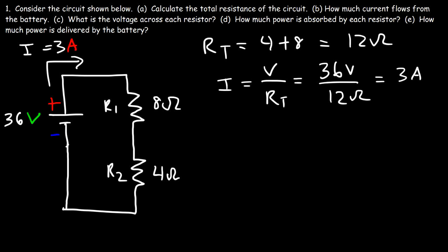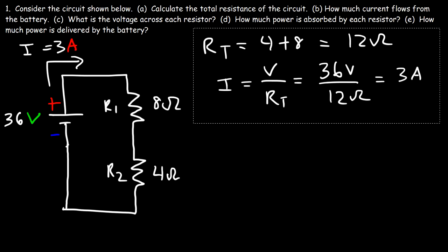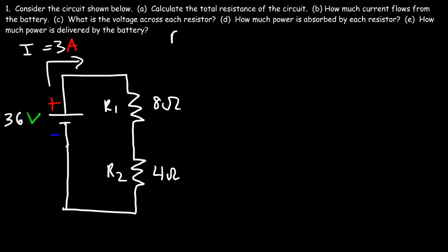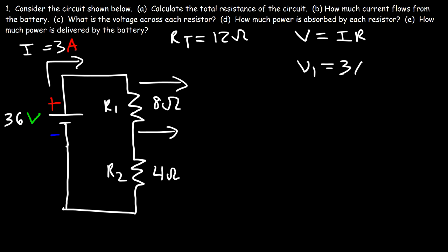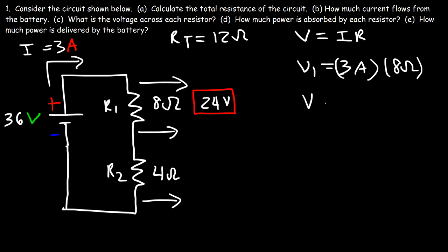Now part C: what is the voltage across each resistor? To calculate the voltage we use Ohm's law — it's equal to the current flowing through a resistor multiplied by the value of the resistance. To calculate V1, it's 3 amps multiplied by the 8 ohm resistor, so the voltage across this resistor is 24 volts. For V2, it's the same current of 3 amps multiplied by 4 ohms, which gives 12 volts.